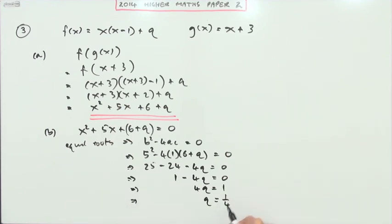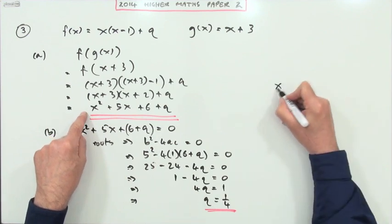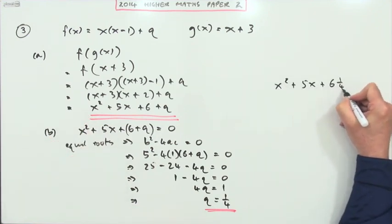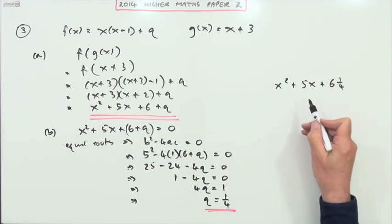Q equals a quarter. Now that's one you can check for yourself if you've got time. Is a quarter the correct answer? Does x squared plus 5x plus 6 and a quarter have equal roots?